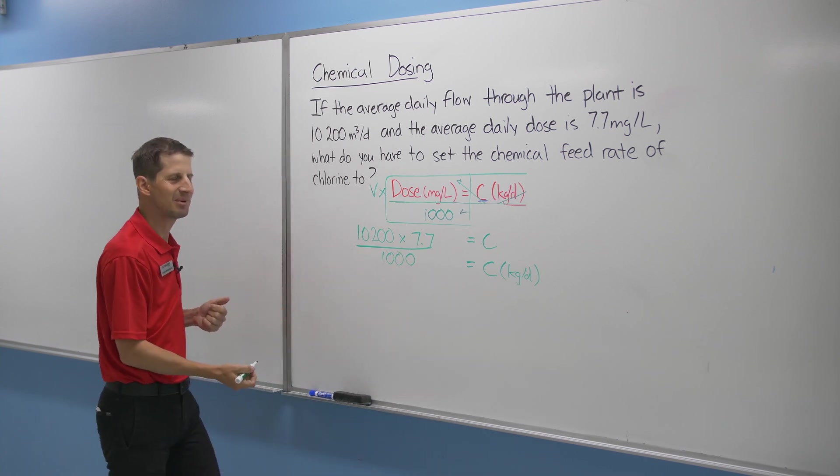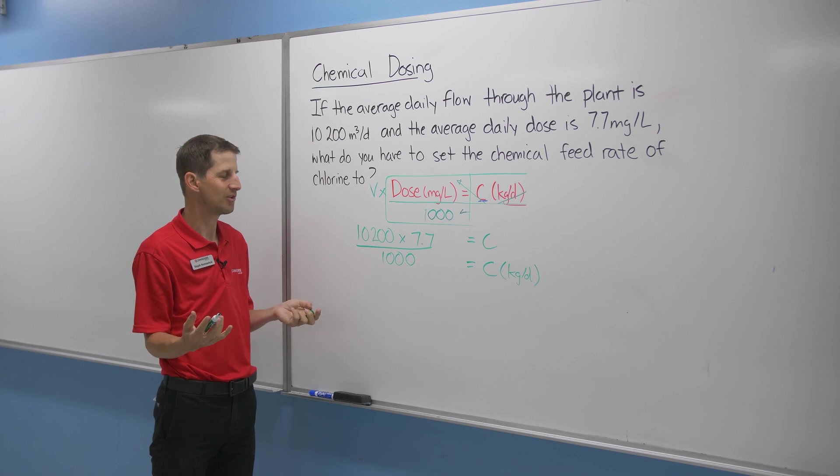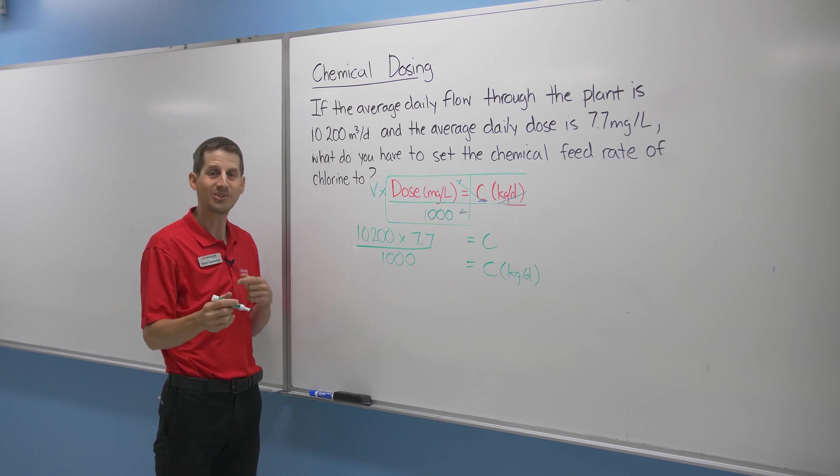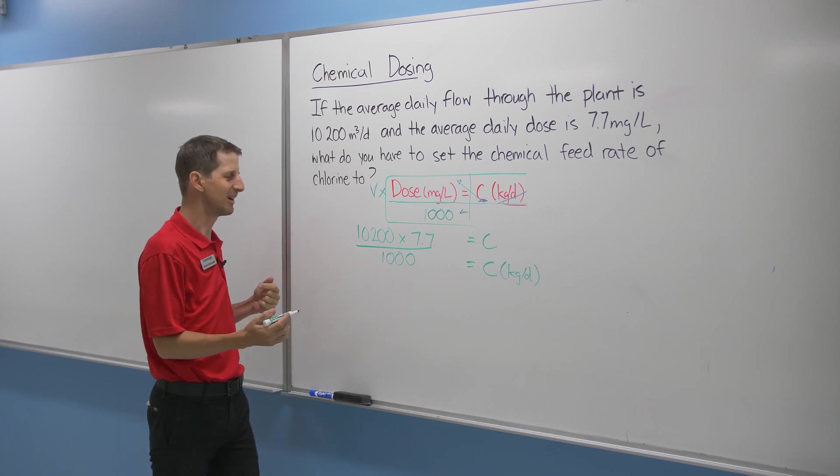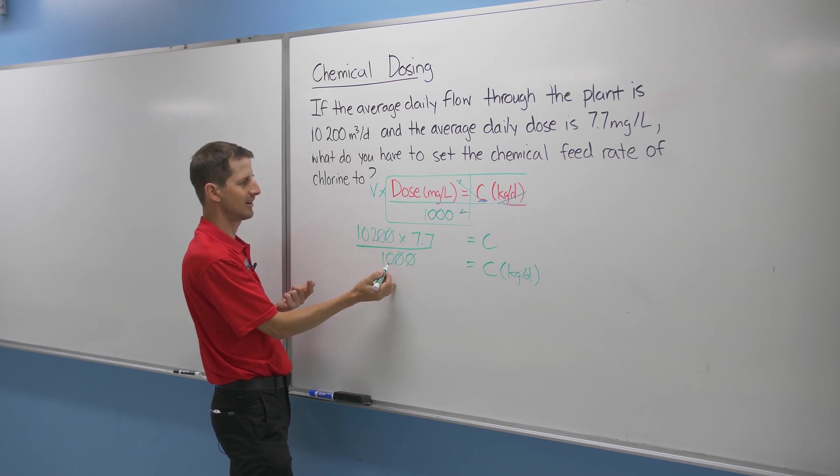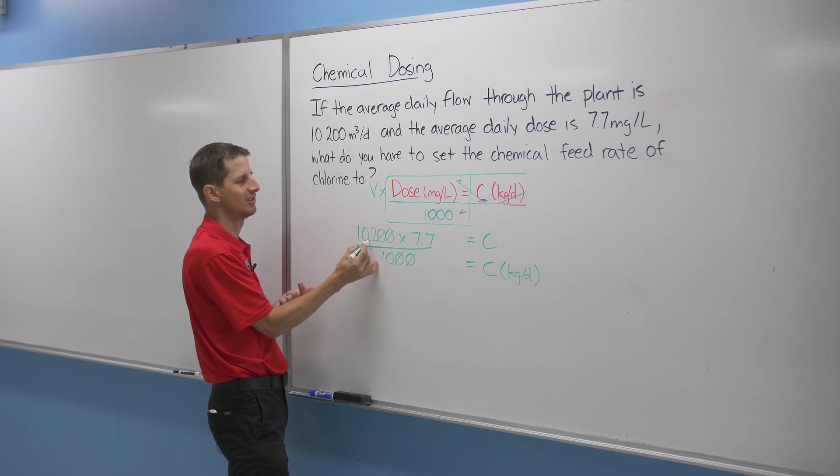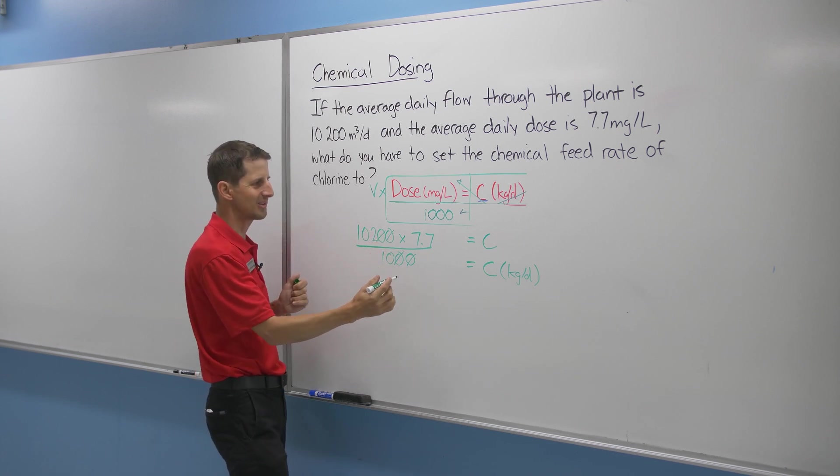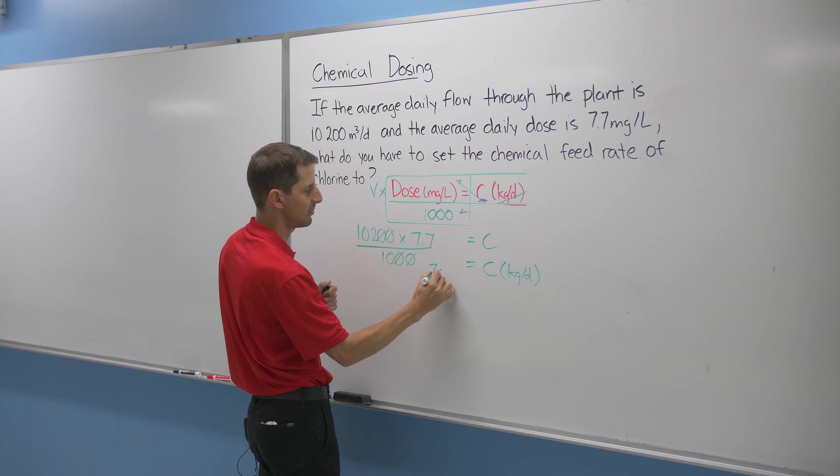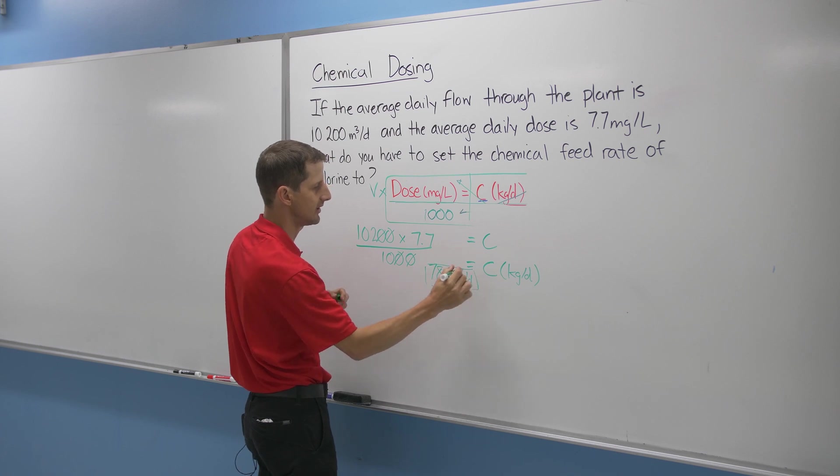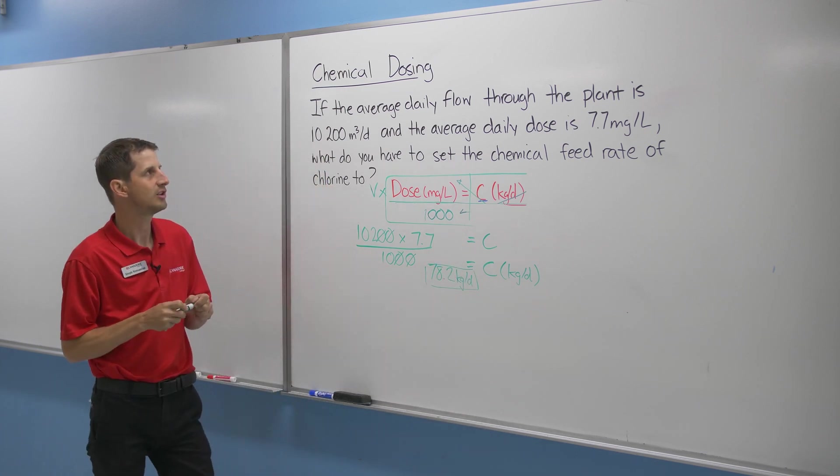I forgot to throw in the divided by a thousand there. So don't forget to do that. But the neat thing about the divide by a thousand, it was actually an international student from India that showed me this because they're not allowed to use calculators when they do all their math going through school. So they learn all these tricks for mental math. But if you have a zero, you can cancel it zero. Cancel it zero. Of course, I only have three zeros, but that's basically divide by 10. So actually, technically I could have a 10.2, but it might be too much. So go ahead and punch that in your calculator and you'll end up with 78.2 kilograms per day as your chemical that you need to feed to match your dose for this question.